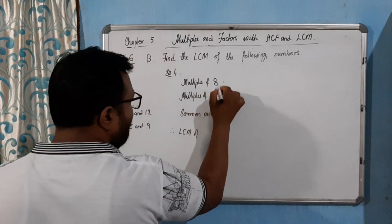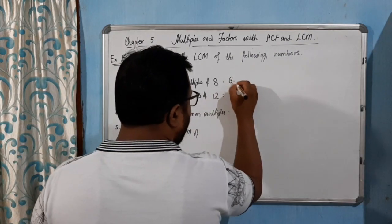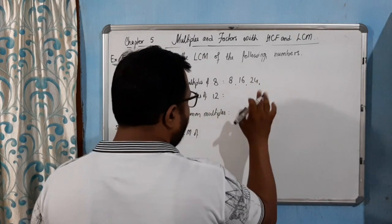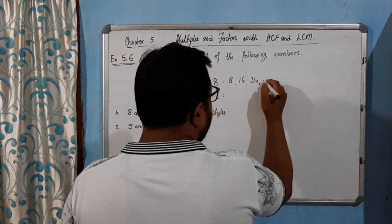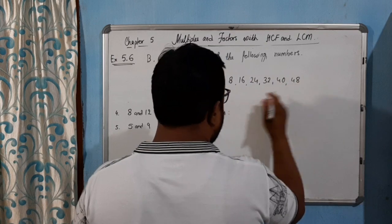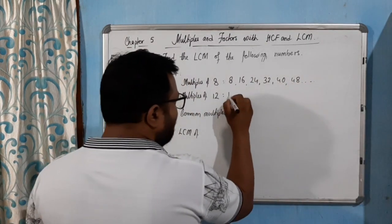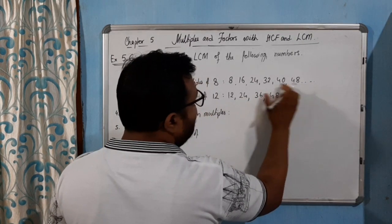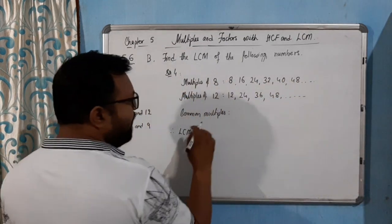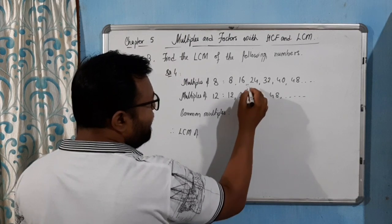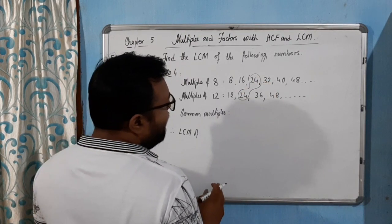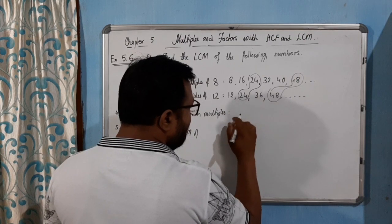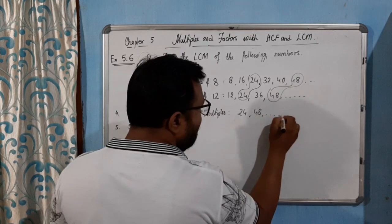For question number four, the numbers are eight and twelve. Eight times one is eight, eight times two is sixteen, eight times three is twenty-four, eight times four is thirty-two, eight times five is forty, eight times six is forty-eight. I think that's enough. For twelve: twelve, twenty-four, thirty-six, forty-eight. We are getting twenty-four as the first common multiple.